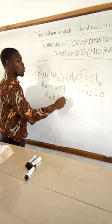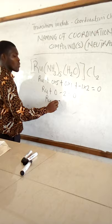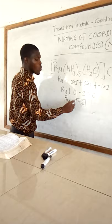Is that okay? So here, ruthenium plus 0 minus 2 equals 0. Then ruthenium will remain here and the 2 will cross the equal sign. We get plus 2 as the oxidation number.